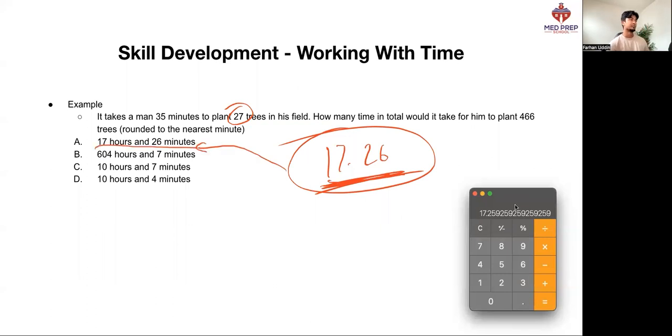It's important to note what's in the calculator at all times. This is the groups of 27 this guy's going to plant. That's not our answer. If we multiply that by 35 minutes that it takes to plant these 27 trees, then we get the actual number of minutes it would take to plant the whole thing. So if we multiply this by 35, it gives us 604.07.